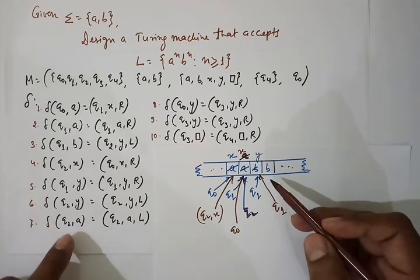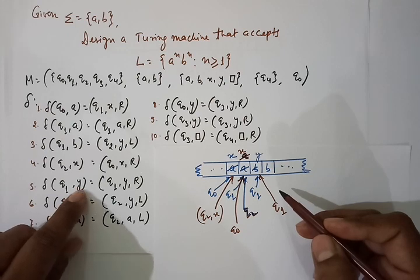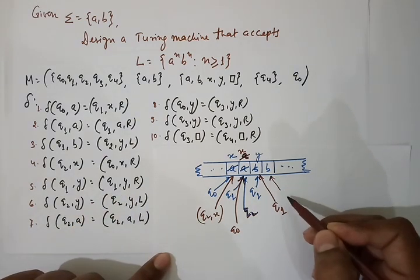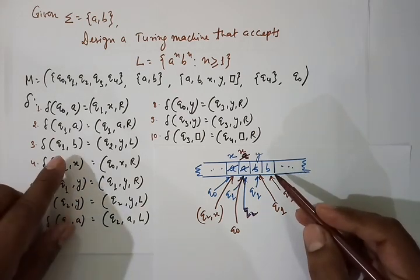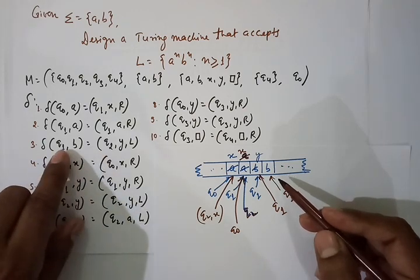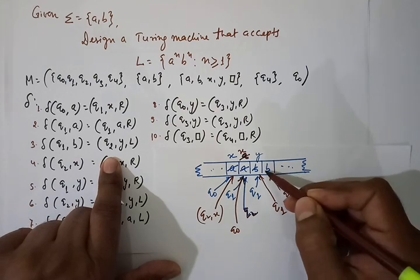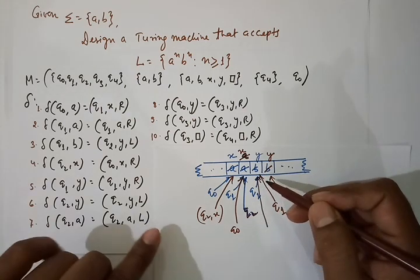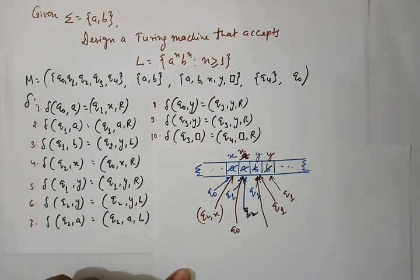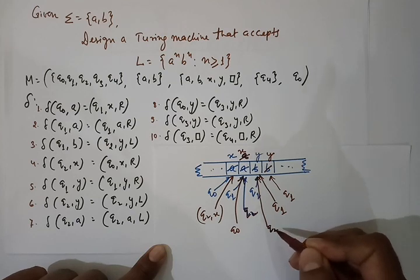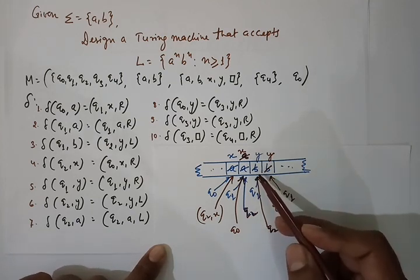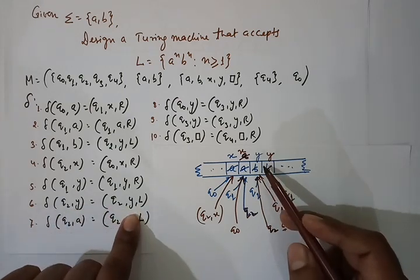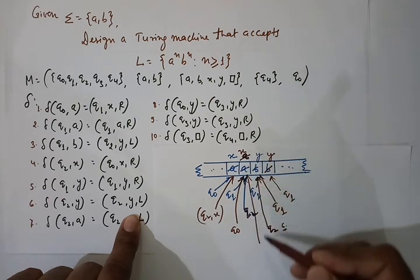In state q1 reading 'B', rule number 3 applies again: we change state from q1 to q2, replace B with Y, and move one cell left. Then in state q2 reading 'Y', rule number 6 applies: state remains q2, replace Y with Y, and move one cell left. Then in state q2 reading 'X', rule number 4 applies: state changes to q0, X replaced by X, move one cell right.